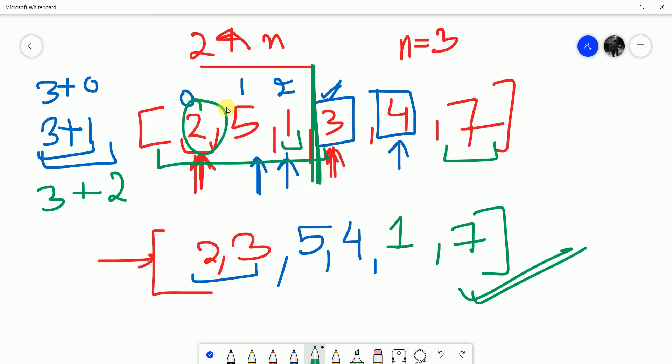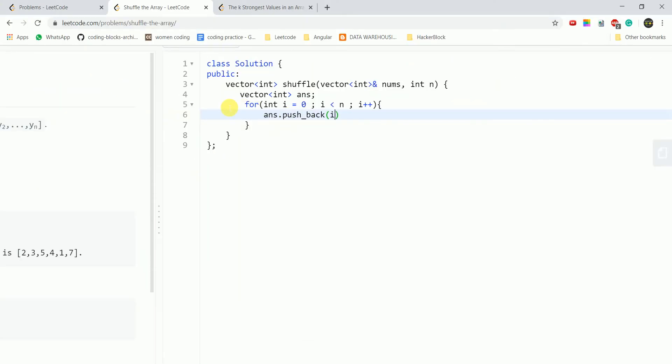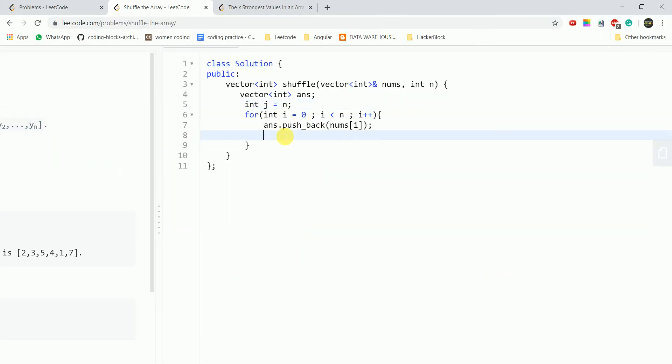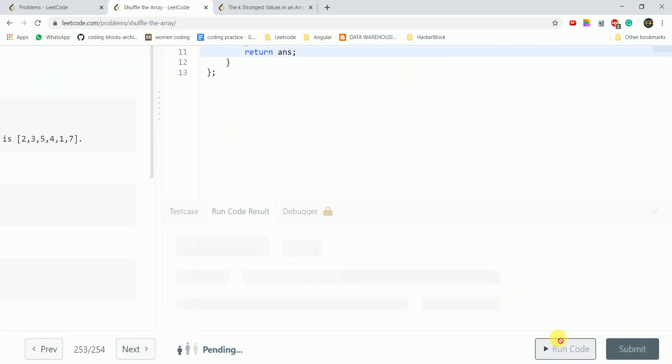And then what we do is answer dot pushback. First we insert the ith character, then n plus ith character. So I push nums of i, and then what I push is I'll take a pointer j, int j is equal to n. I'll point initially j to the nth character and then I'll insert the jth character and then what I'll do is increment j every time. So this is the resultant array and then we'll return it from the function.